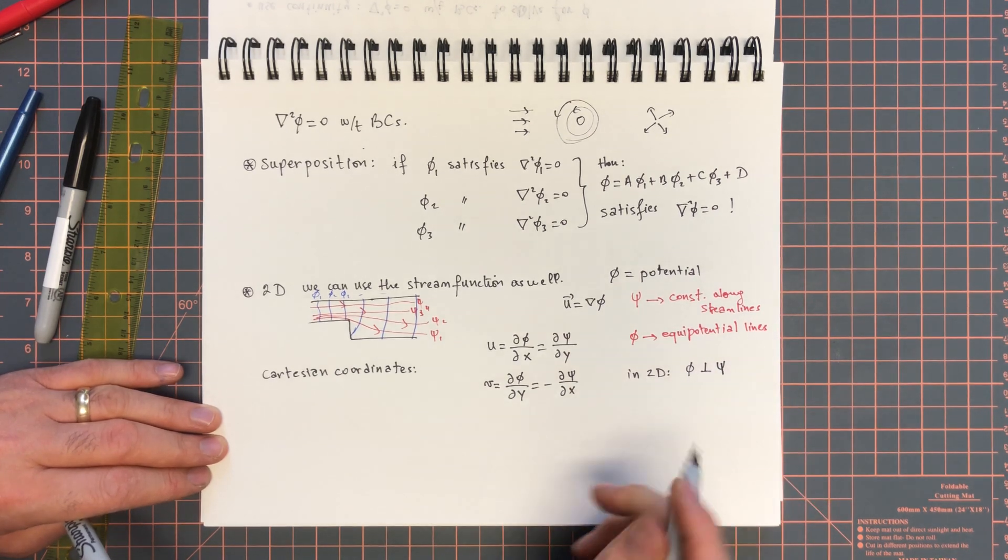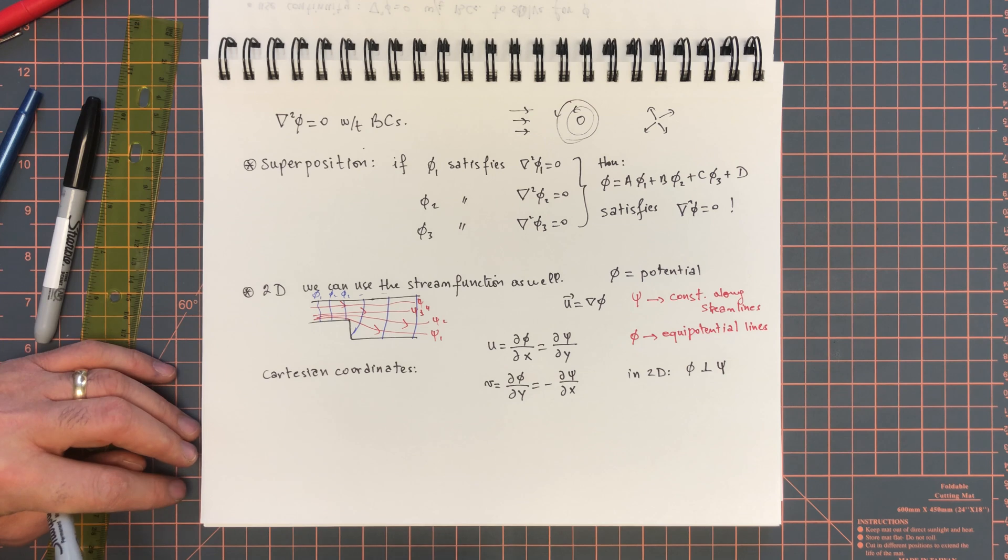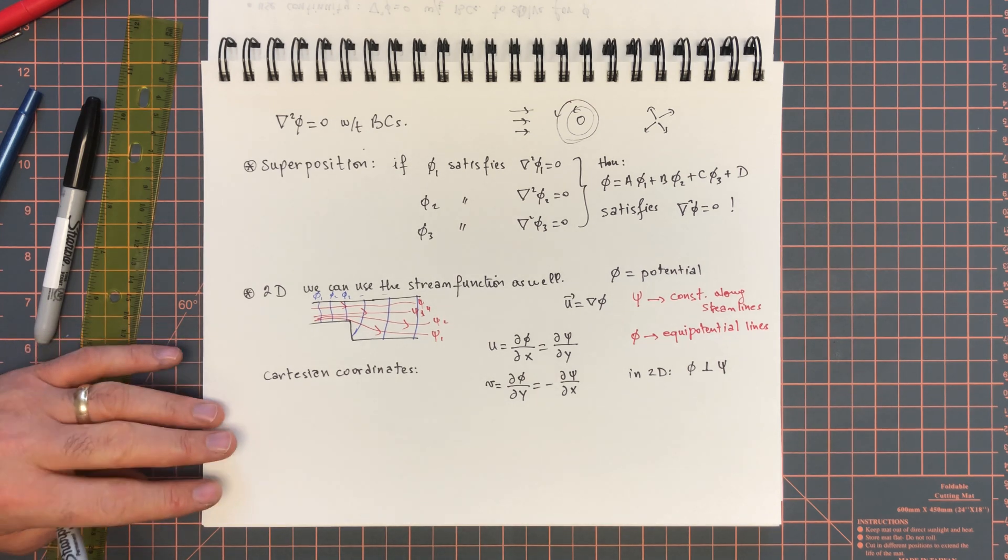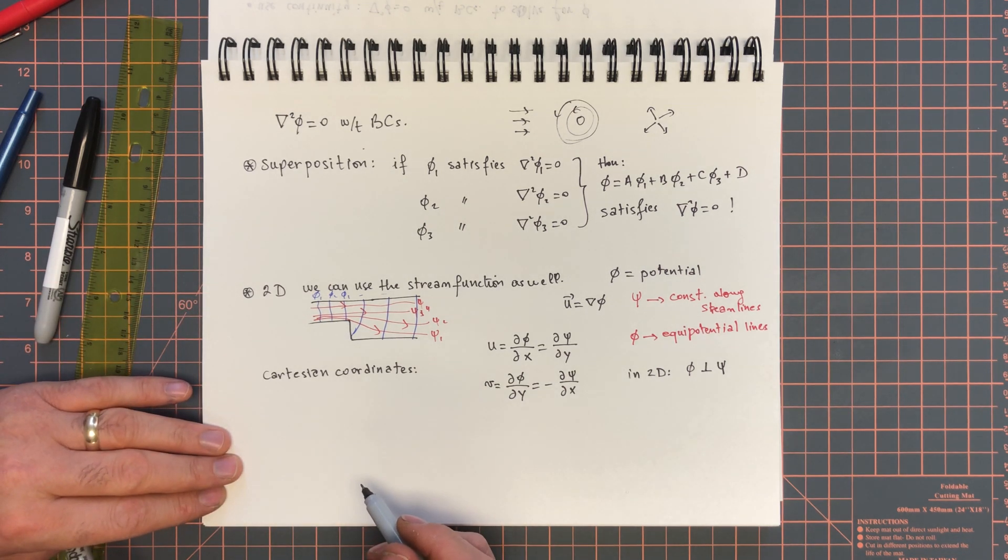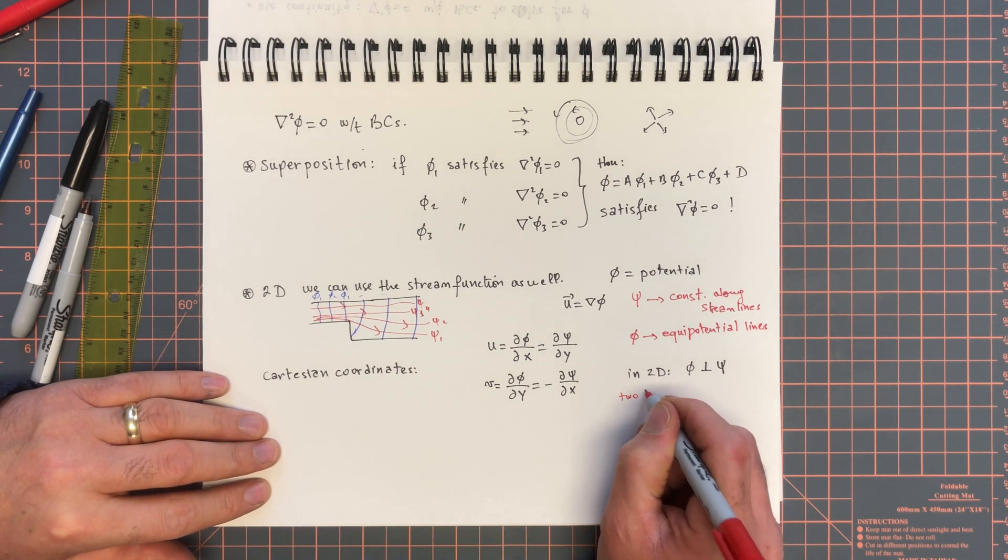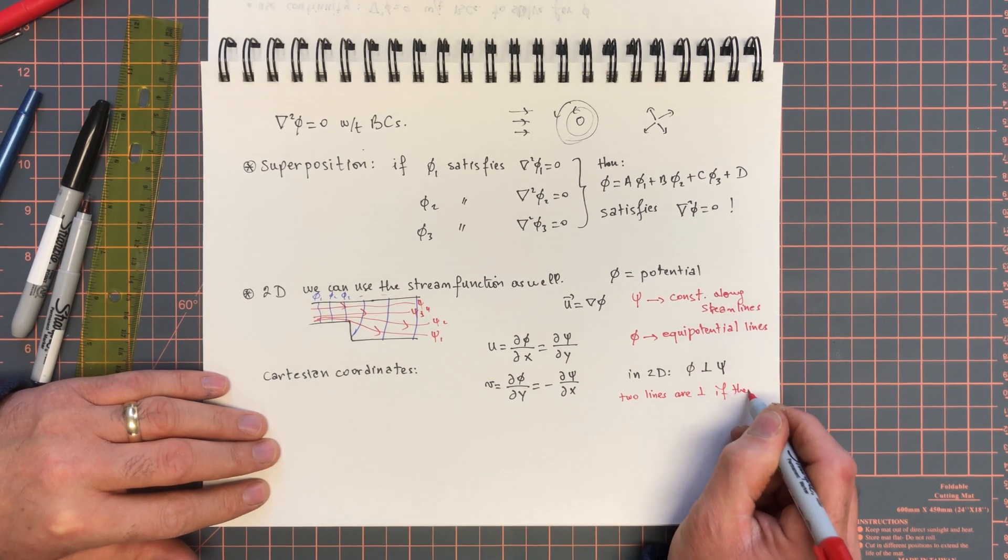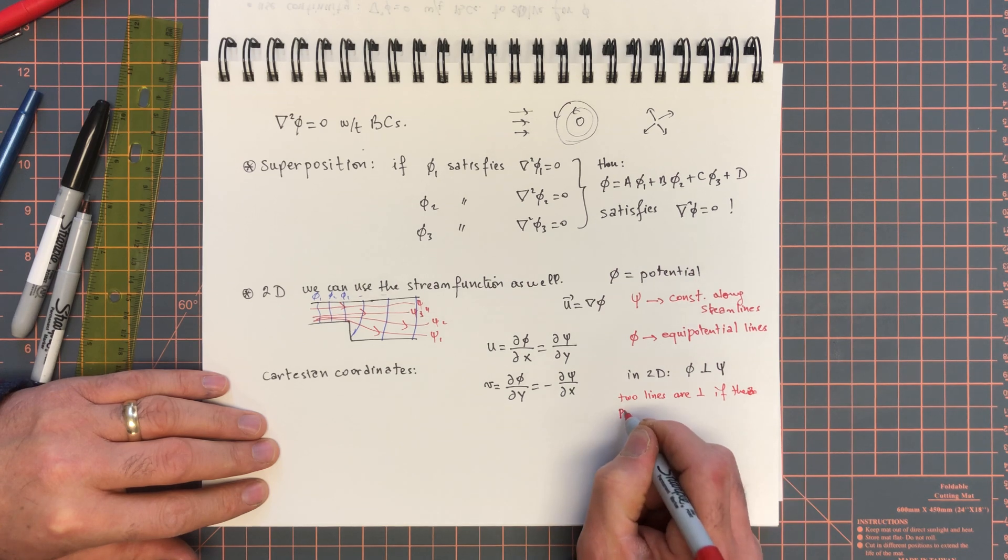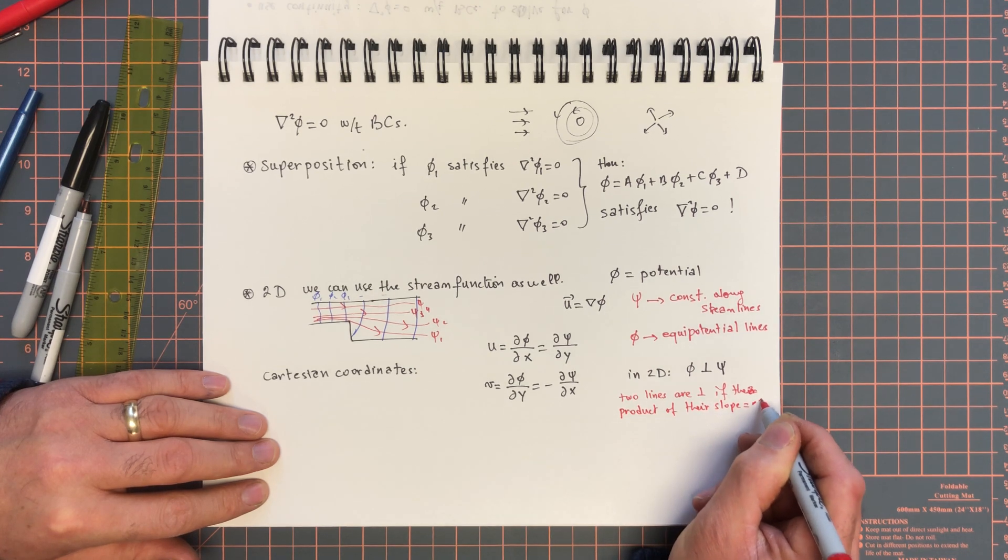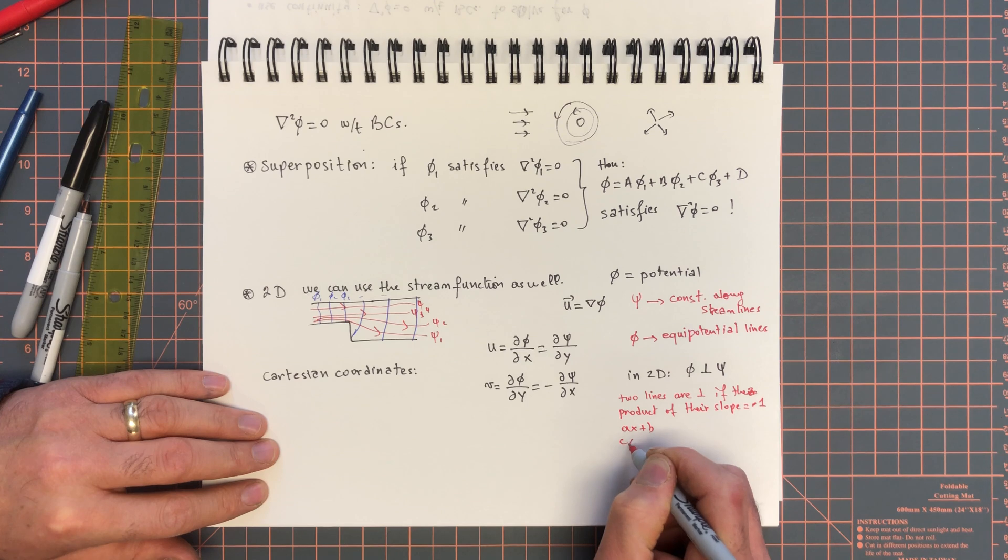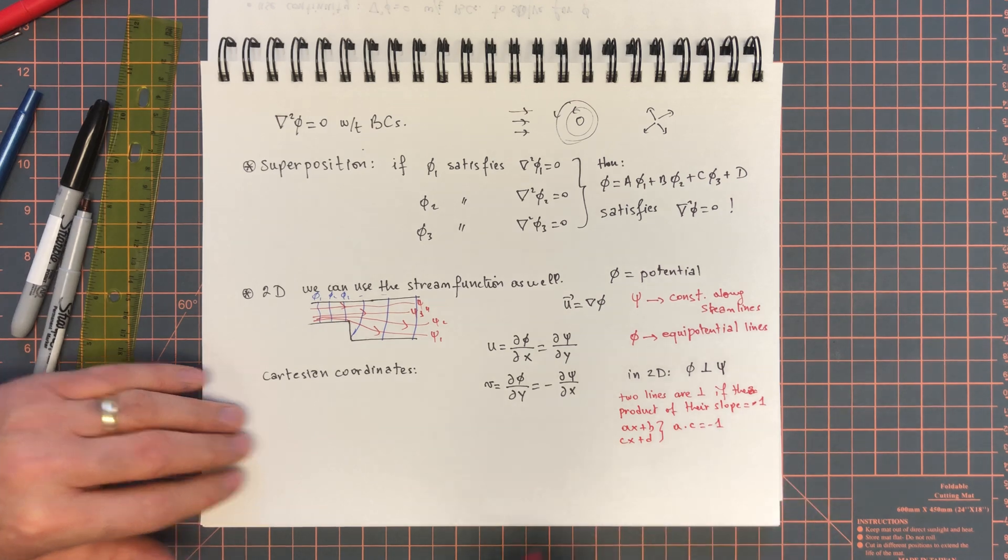And you can show this very easily by showing that the product of the slopes of these, of two lines, of a streamline and a potential line, is equal to minus 1. If you remember, two lines are perpendicular if the product of their slopes is equal to minus 1. So, if you have ax plus b and cx plus d, they are perpendicular if a times c is equal to minus 1.